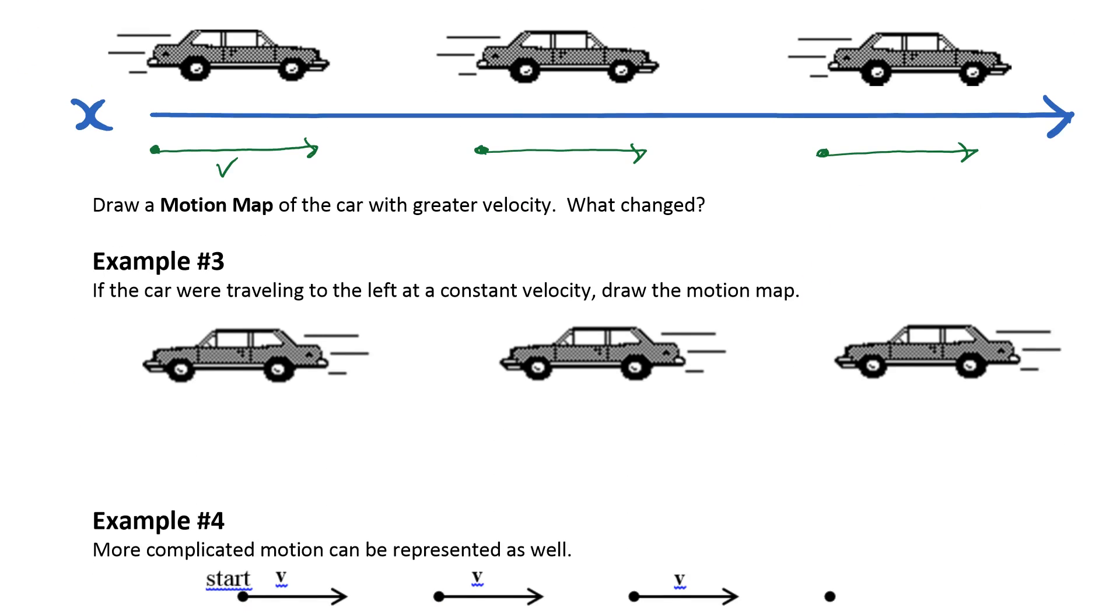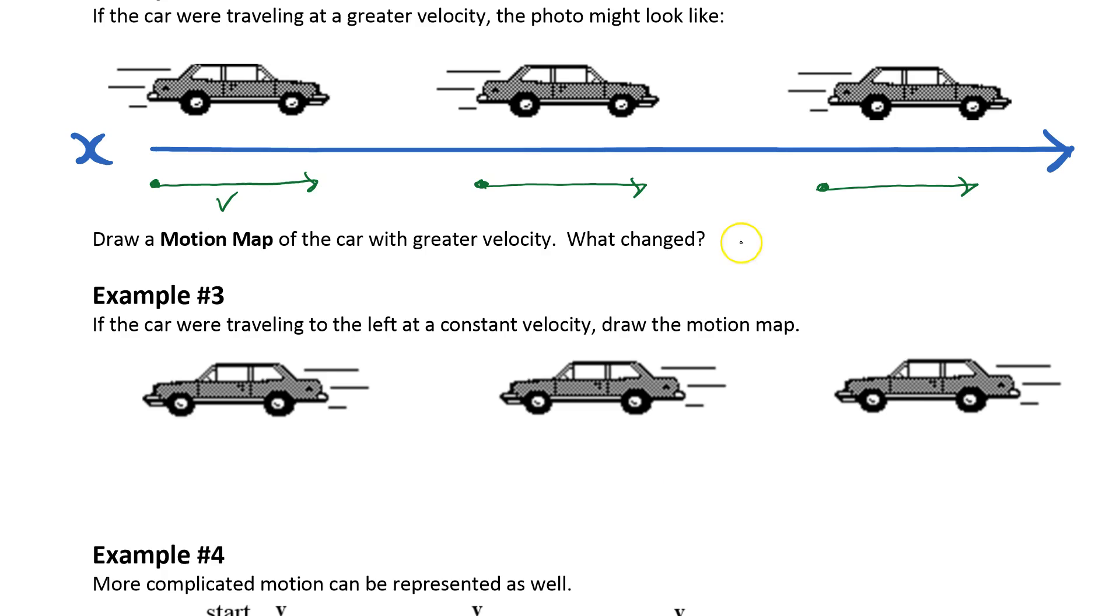The length of the arrow gives us a sense of how large that velocity is. Draw a motion map of the car with greater velocity. What changed? Well, the arrows are longer and the dots are farther apart.